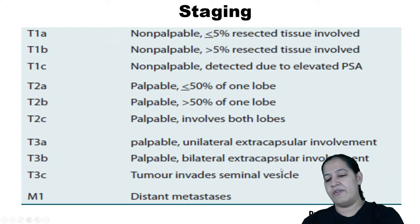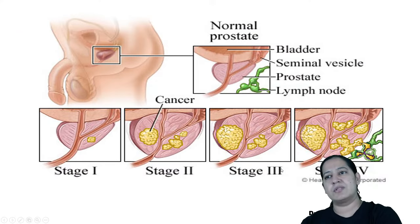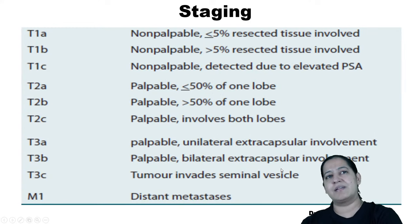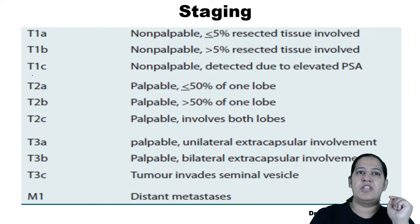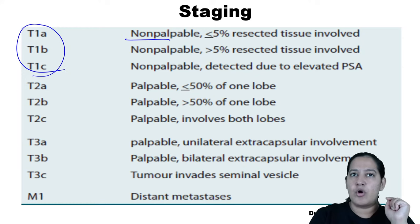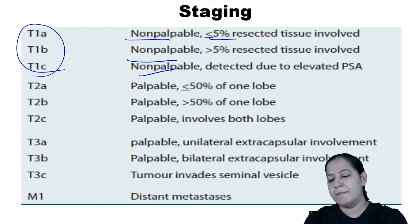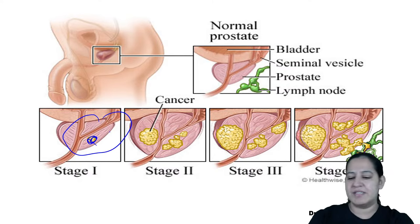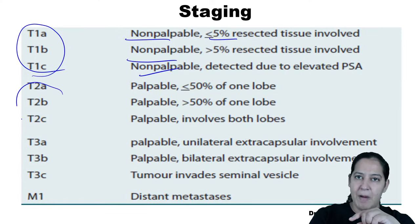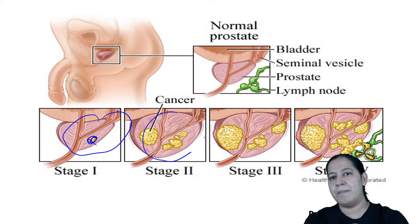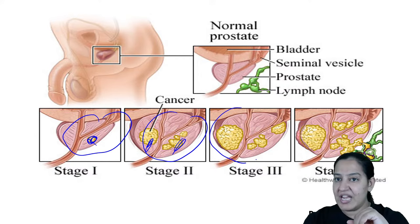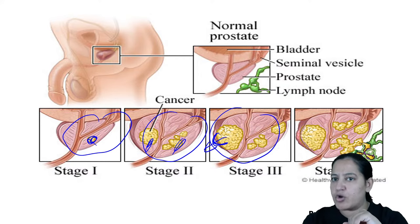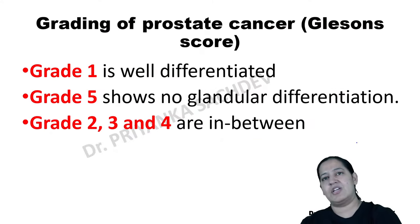Staging: four stages. T1 — tumor is non-palpable, less than 5% of the gland is involved. T2 — palpable but still less than 50%, can involve one or both lobes. T3 — extra-capsular involvement, tumor coming out of the capsule. T4 — spreading to lymph nodes and distant metastasis. Stage 4 is always metastatic. You can read the staging details by yourself.